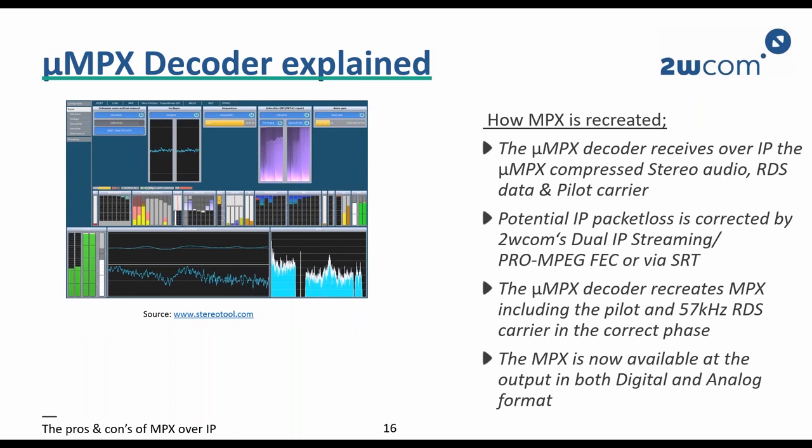How is micro-MPX turned back to a standard MPX output? We believe decompression works as follows. The micro-MPX decoder receives via IP the following components: stereo audio, RDS data, and the pilot carrier with information on the phase of the 19 kHz carrier. Specifically, the 19 kHz pilot carrier is important because once recreated, it becomes the cornerstone for the decompressed MPX.